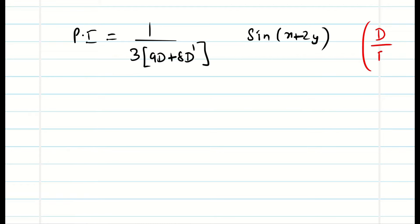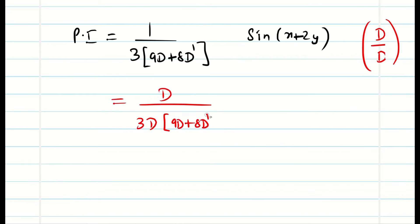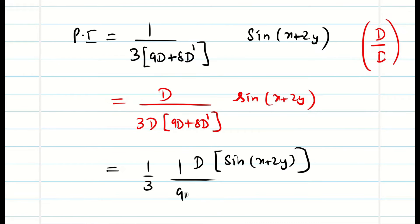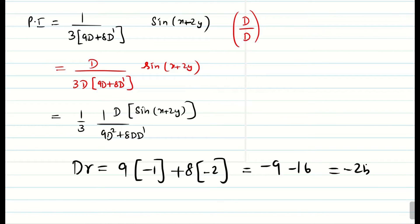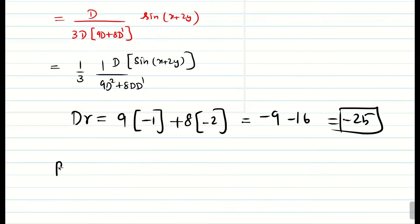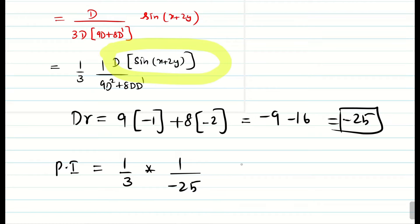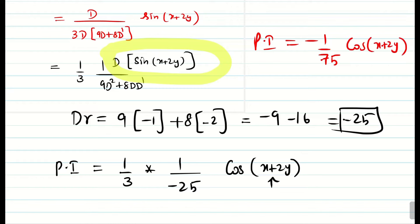As mentioned in the previous video, we multiply and divide by d. So PI = (d/3) · 1/(9d² + 8dd') · sin(x + 2y) = (1/3) · d · [1/(9d² + 8dd')] · sin(x + 2y). Now substitute: 9·(-1) + 8·(-2) = -9 - 16 = -25. Denominator is non-zero, so we proceed. PI = (1/3)·(-1/25)·d[sin(x + 2y)]. Differentiating sin(x + 2y) partially with respect to x gives cos(x + 2y). Therefore PI = -1/75 · cos(x + 2y). The solution is z = CF + PI.